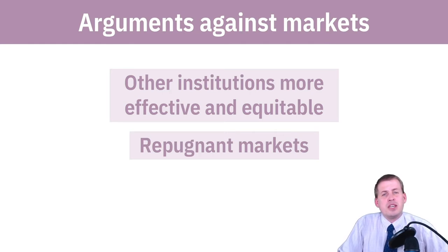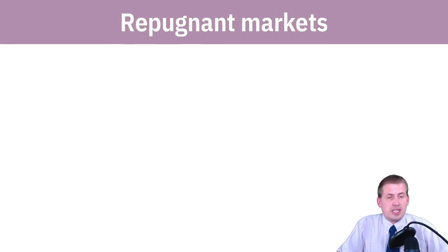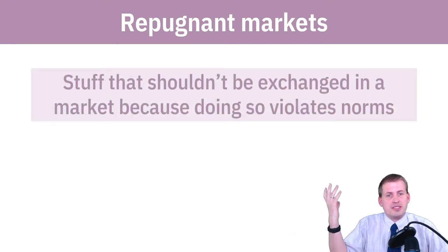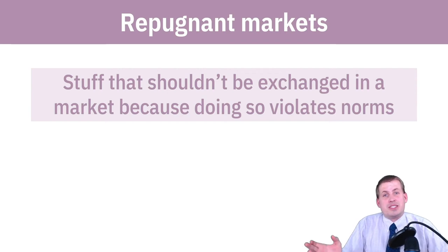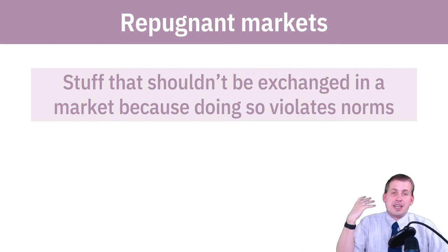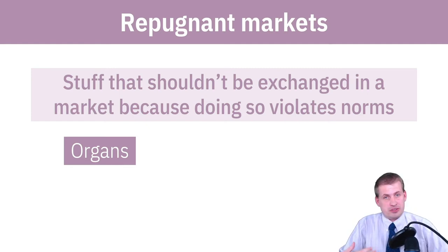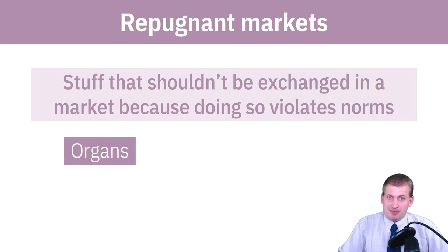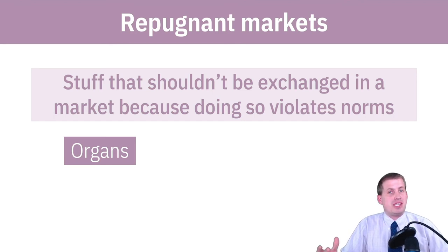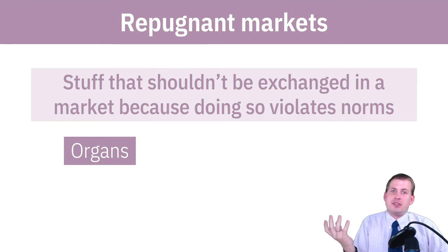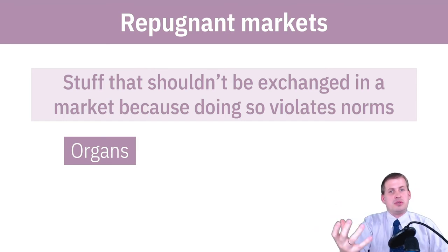Another argument against markets is the concept of a 'repugnant market' — where we've collectively decided as a society that something should not be bought and sold because it violates norms. In the United States, we have a norm against selling organs. We have organ donors who give up organs for free when they die, but you can't sell one of your extra kidneys for money. If we started selling organs, it would likely result in poor people selling organs to rich people, and only those with lots of money would be able to access organs.